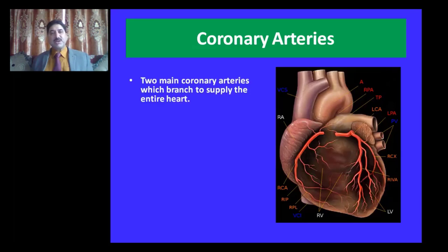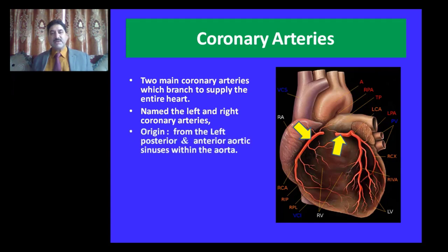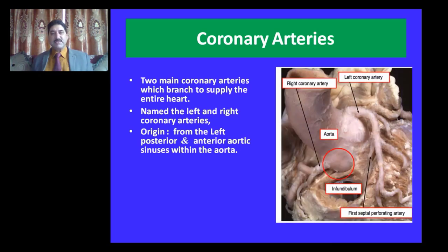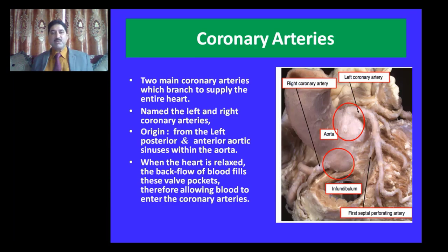As shown in this diagram, there are two main coronary arteries: right and left. The right coronary artery arises from the right aortic sinus, whereas the left coronary artery originates from the left posterior aortic sinus. The encircled areas in this diagram represent the right aortic sinus and left anterior aortic sinus respectively. Aortic sinuses are dilatations above the aortic valves. There are three dilatations — two are coronary, giving origin to the coronary arteries, and one is non-coronary. When the heart is relaxed, backflow of blood fills these valve pockets, allowing blood to enter the coronary arteries. Thus coronaries are filled during diastole, in contrast to other arteries of the body which are filled during systole.